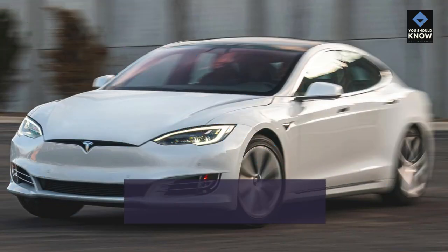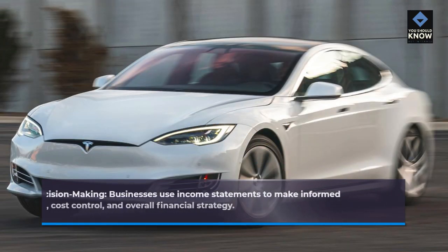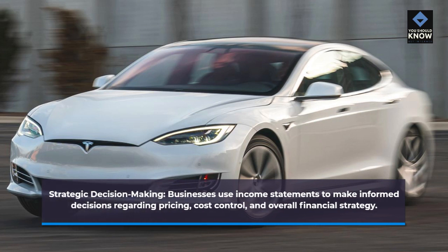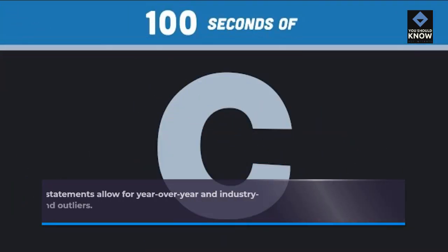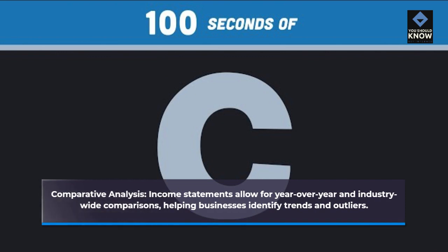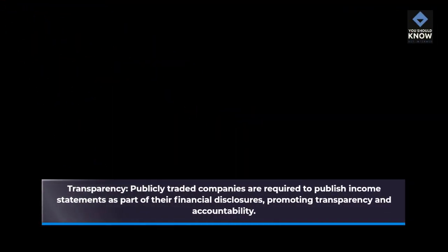Strategic decision making: businesses use income statements to make informed decisions regarding pricing, cost control, and overall financial strategy. Comparative analysis: income statements allow for year-over-year and industry-wide comparisons, helping businesses identify trends and outliers. Transparency: publicly traded companies are required to publish income statements as part of their financial disclosures, promoting transparency and accountability.